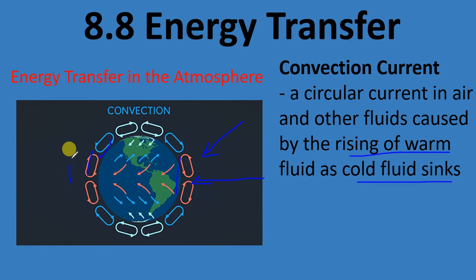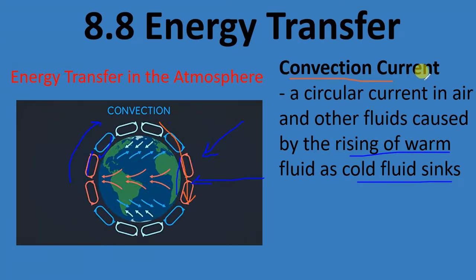You're getting these convection currents happening on the globe at a giant scale. Energy moves away from the equator up to the poles, while cooler air comes down from the poles to the equator. It's just one big cycle. That's one way energy is moved around via a convection current.